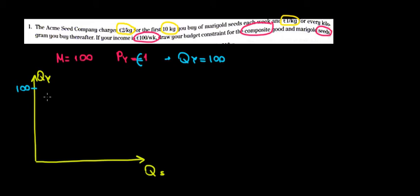Let's not rush to draw the slope. Let's just have a look. First 10 kilos we buy for 2 euros. So 2 times 10 is going to give us 20 euros we spend on the first 10 kilos of seeds. So when quantity of seeds is equal to 10, we spend 20 euros.